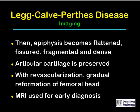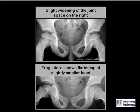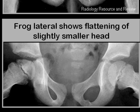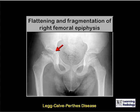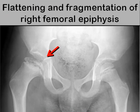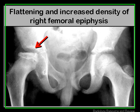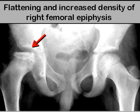MRI is being used for early diagnosis of Legg-Calvé-Perthes disease. These two conventional radiographs on the same individual show slight widening of the joint space on the right on the frontal view — a very subtle finding. On the frog lateral, the right femoral head is clearly flatter and slightly smaller than the left. A more advanced case shows flattening and fragmentation of the right capital femoral epiphysis. In another case, there is flattening and increased density of the capital femoral epiphysis on the right side.